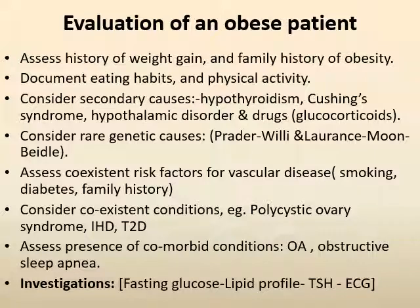Evaluation of an obese patient: first, assess the history of weight gain and family history of obesity. Document eating habits and physical activity. Consider secondary causes such as hypothyroidism, Cushing's syndrome, hypothalamic disorders and drugs, and rare genetic causes like Prader-Willi syndrome and Lawrence-Moon-Biedl syndrome. Assess co-existent risk factors for vascular diseases such as smoking, diabetes and family history, and co-existent conditions such as polycystic ovary syndrome, ischemic heart disease and type 2 diabetes.